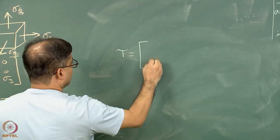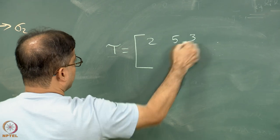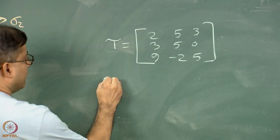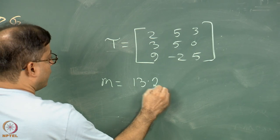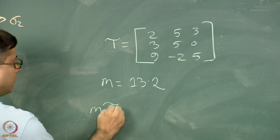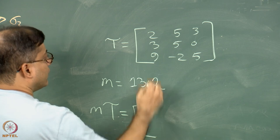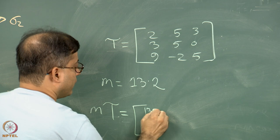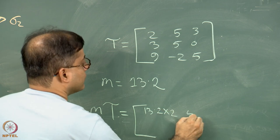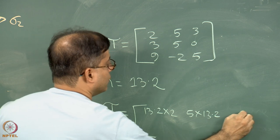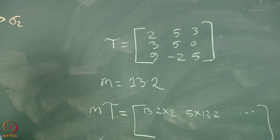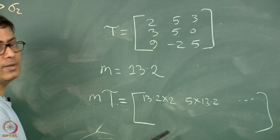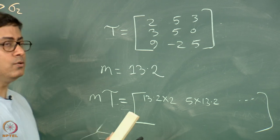Imagine tau is the matrix with elements 2, 5, 3 in the first row; 3, 5, 0 in the second row; and 9, minus 2, 5 in the third row, and m is equal to 13.2. Then m·tau is given by multiplying each of these elements by 13.2 — for example, 13.2 times 2, then 5 times 13.2, and so on. I request students to do this themselves even though it looks simple. Multiply each element by 13.2 and write it down — do not ignore even these small problems.